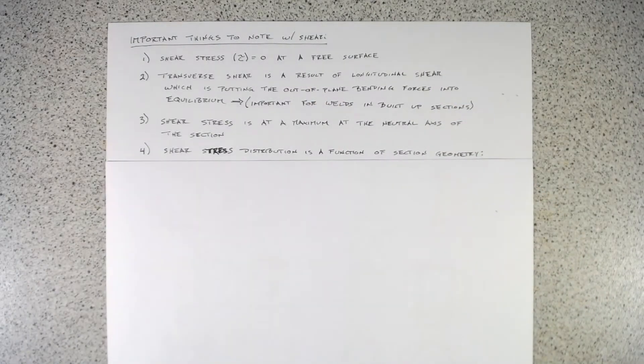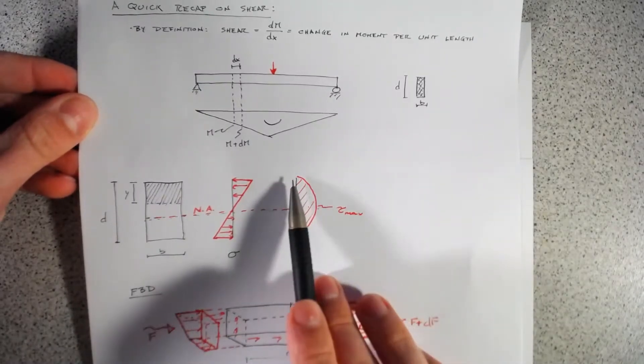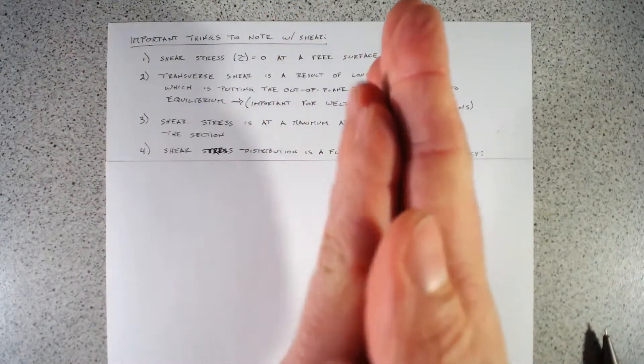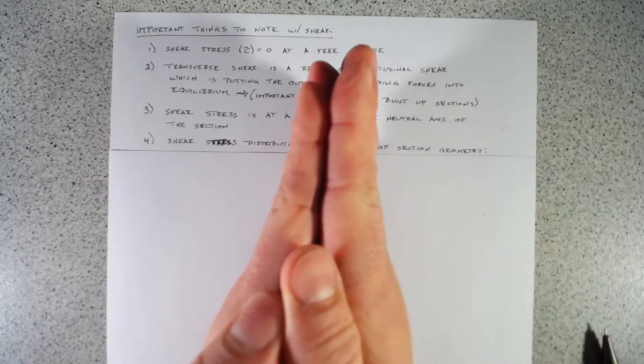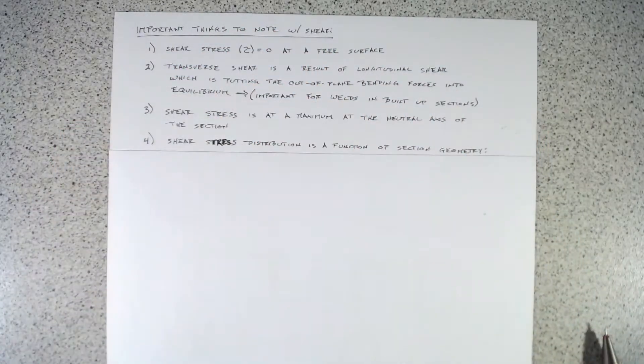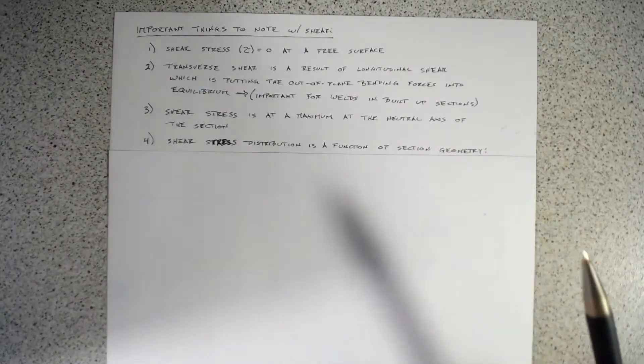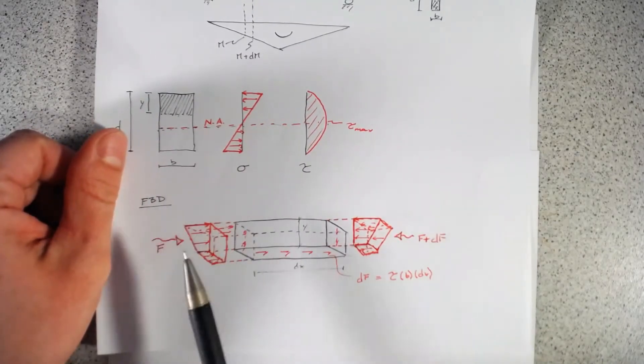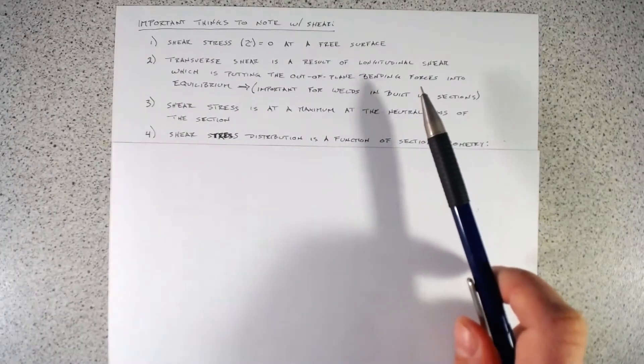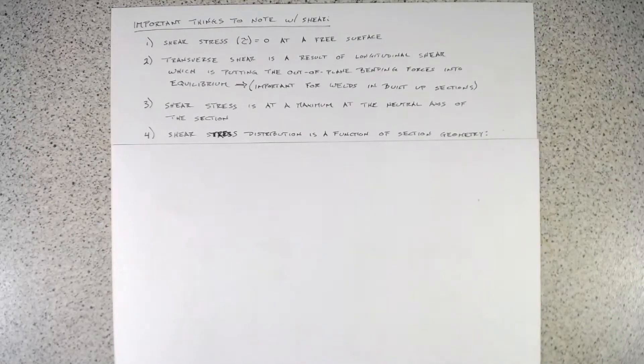The first one is that shear is zero at a free surface. If we go back to our little free body diagram, here at the top, this is a free surface, we have shear zero. That makes sense. You need two elements rubbing across each other. You can think of shear if you've got your hands here and you're moving them back and forth. You're going to generate some friction. That friction is analogous to your shear. But you're only going to feel it on your palms. You don't feel anything on the back of your hands. That's the free surface. The other one is that, just like we said with our little free body diagram, our transverse shear is a result of our longitudinal shear. This is a big deal when it comes to built up sections and looking at what the demand on a weld would be.